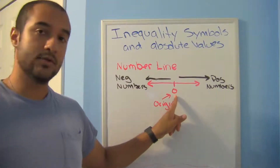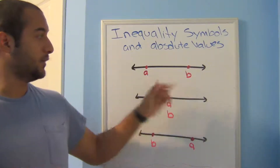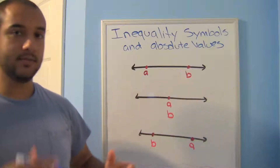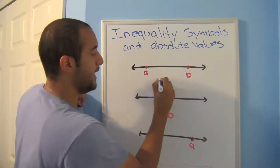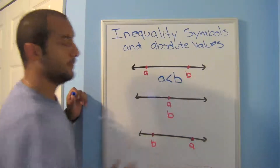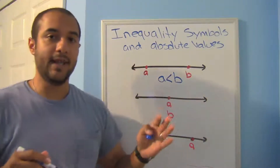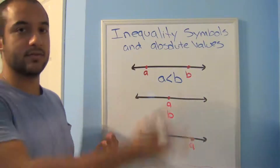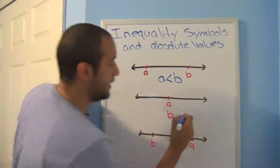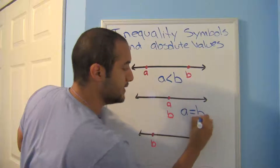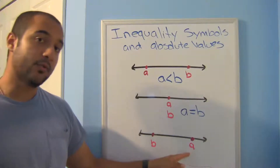Your origin is always zero. Here I'm comparing coordinates a and b. So a relative to b — if I notice here a is less than b, I know it's less than b because it's to the left of b. On a number line, anything to the left is smaller than whatever's to the right. Here I notice that a and b are right on top of each other, so a is equal to b. In this last one, a is to the right, so a is greater than b.